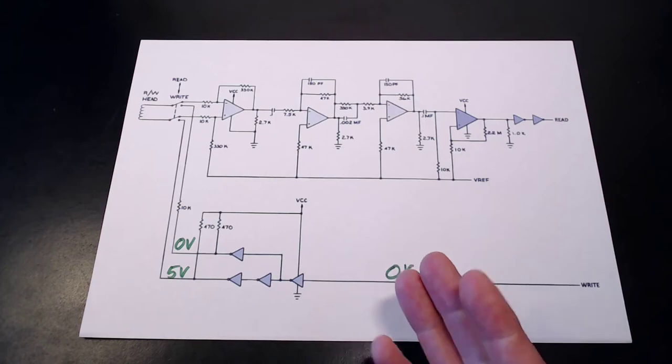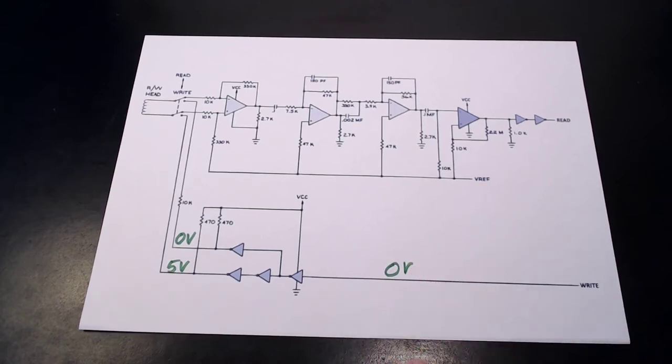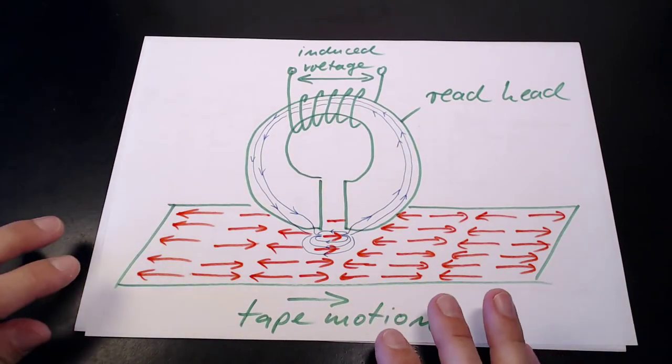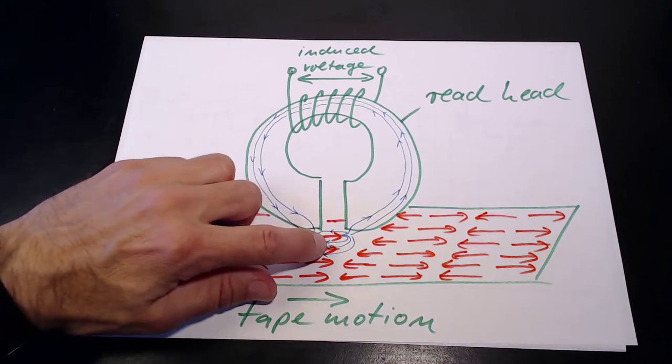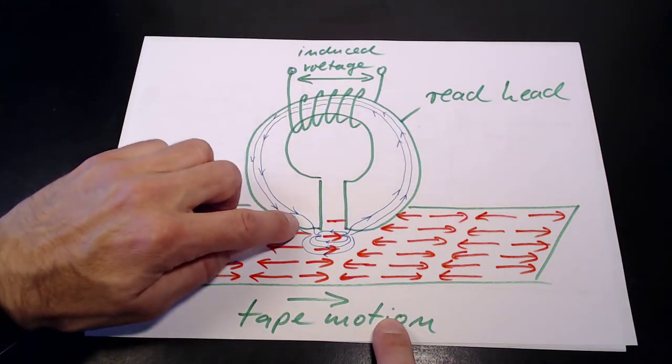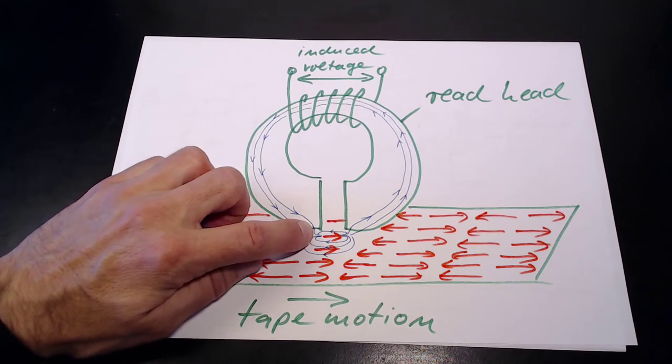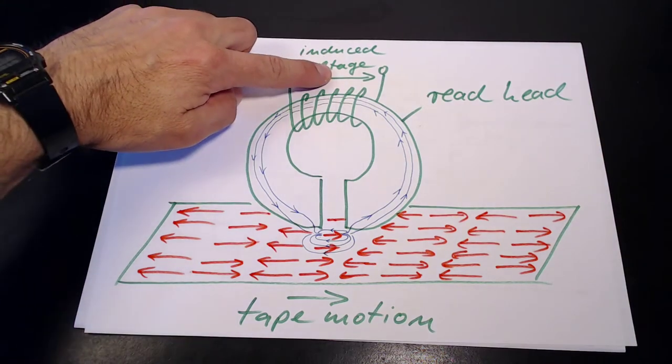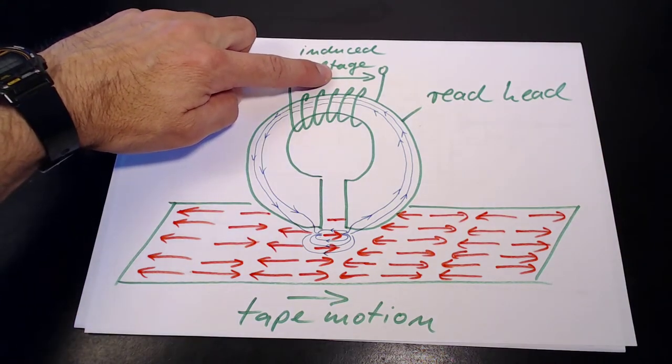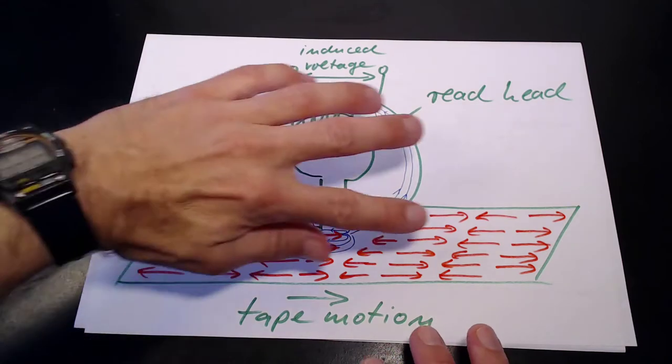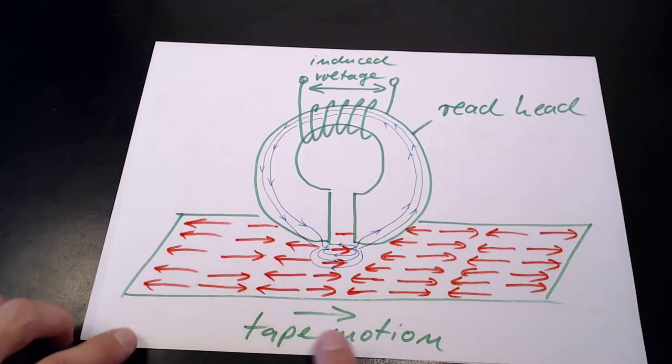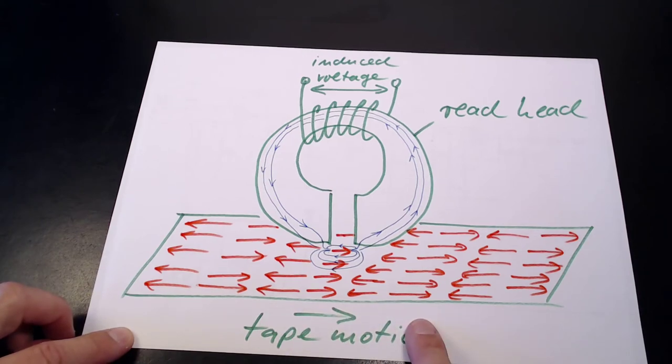But what about reading back our data now? That's where things get a little more interesting. During a read operation, the magnetic field of our tape produces a magnetic flux through the read head coil. According to Faraday's law of induction, the voltage induced in the coil is equal to the negative rate of change of that flux. So we get a signal proportional to the negative rate of change in B caused by our tape moving past the read head.